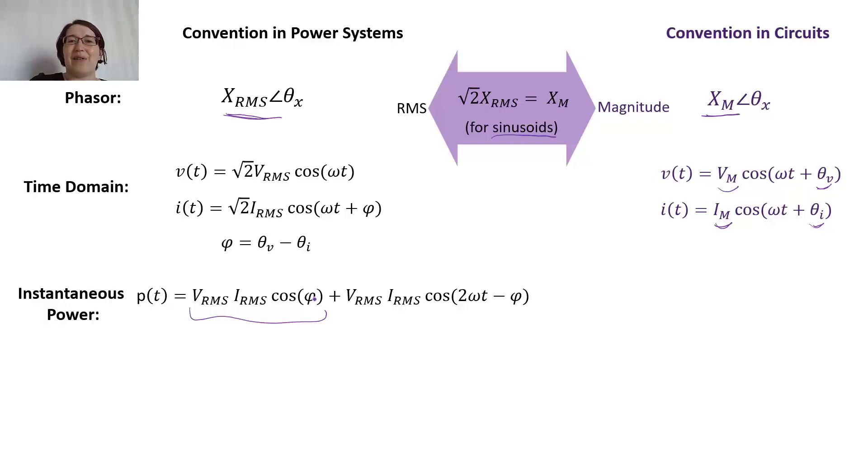So we get this equation shown here. And when we look at the average power, we just take this first term because that's a non-zero term. And then when we take the average of this one, the second term, because it's a cosine, it's going to go to zero. So we just look at that first term.